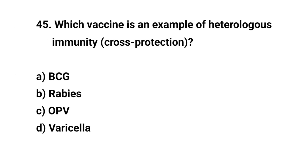Question number 45. Which vaccine is an example of heterologous immunity? The right answer is A: BCG.